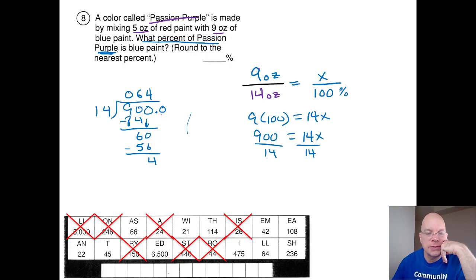Let's reveal the zero in the tenths place and bring it down so we can keep dividing and line up a decimal in our quotient. Three fourteenths is 42, that's too much. Two fourteenths is 28.